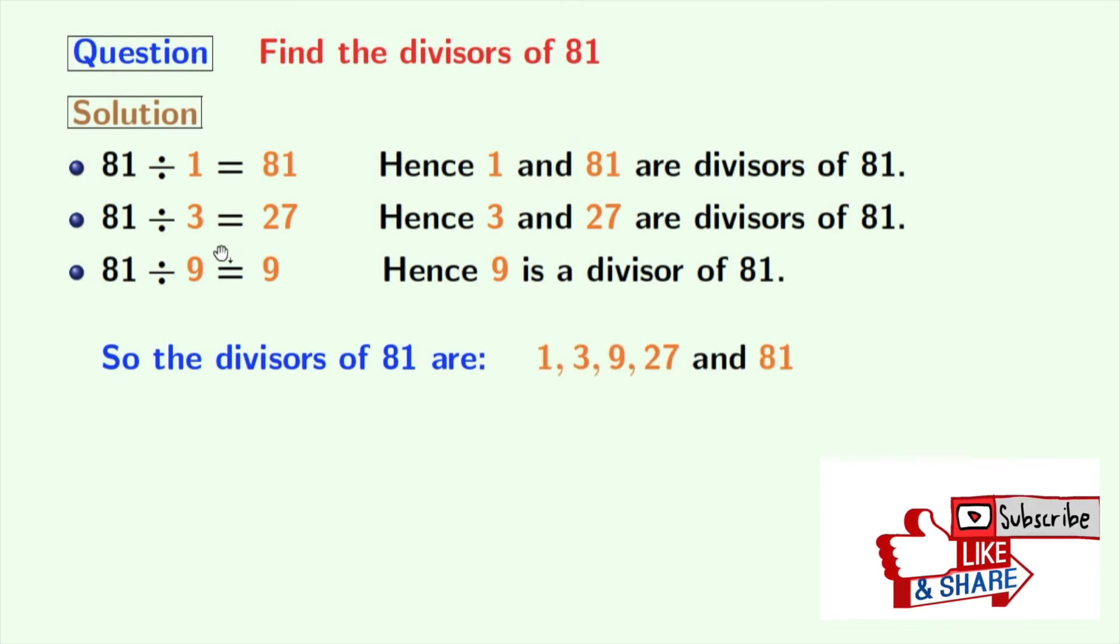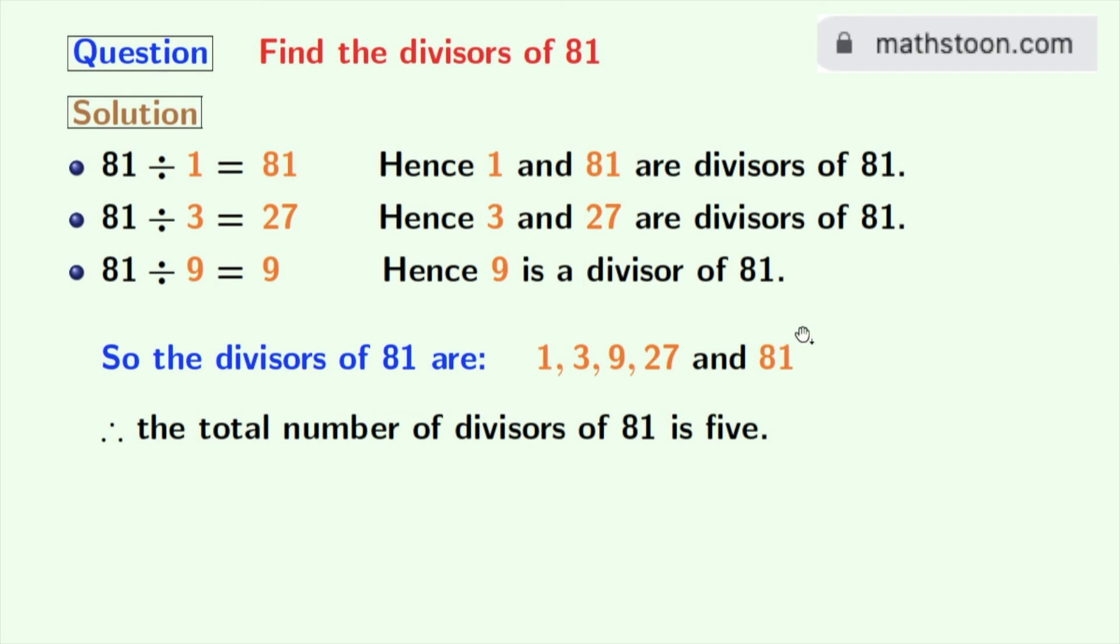These numbers are 1, 3, 9, 27 and 81. So the total number of divisors of 81 is 5.